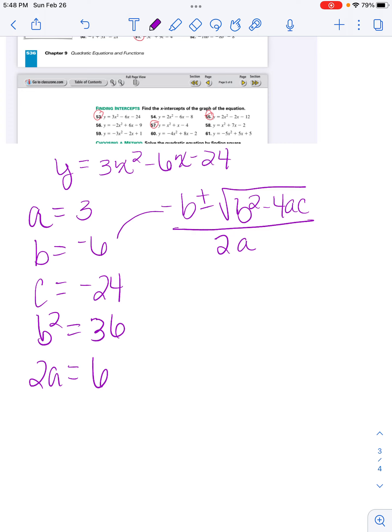So again, negative times negative is positive 6 plus or minus, b squared is 36 minus 4 times 3 times negative 24 over 6. Then I'm going to start to simplify.